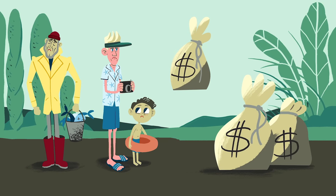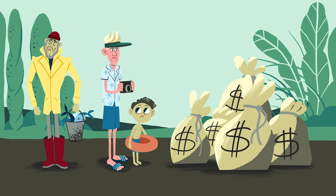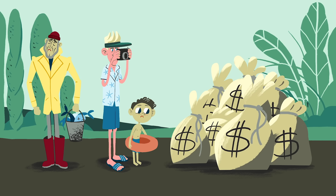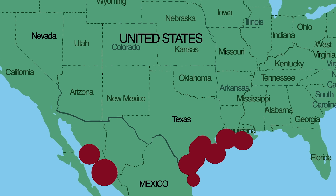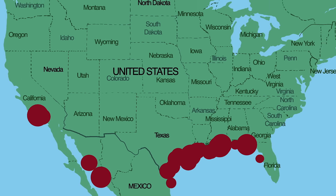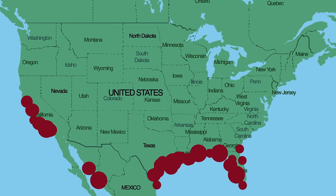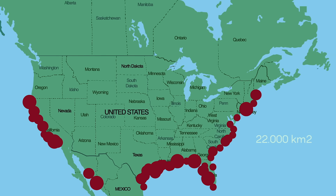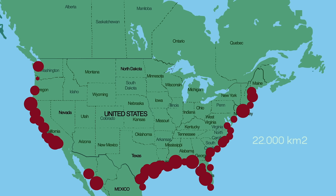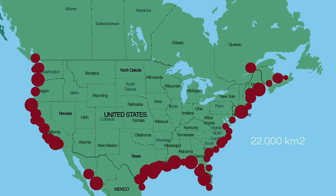This dead zone currently costs U.S. seafood and tourism industries as much as $82 million a year, and that cost will only increase as the dead zone gets bigger. On average, the Gulf dead zone is roughly 15,000 square kilometers. But in 2019, it grew to over 22,000 square kilometers, approximately the size of New Jersey.